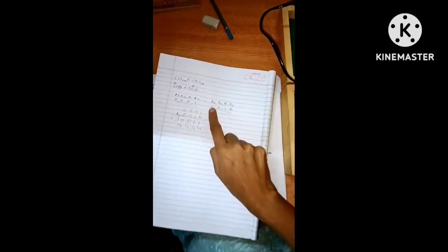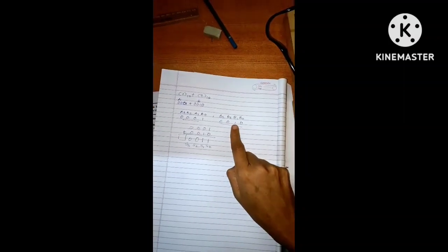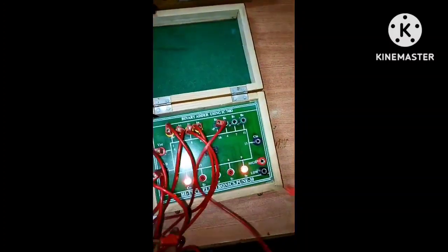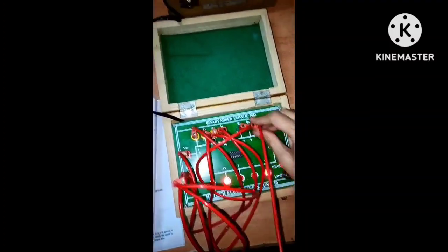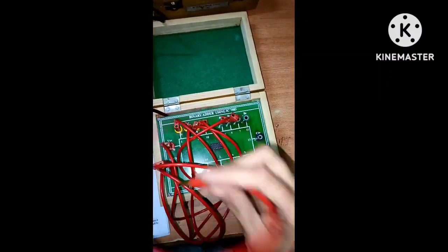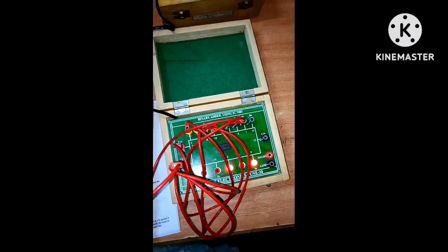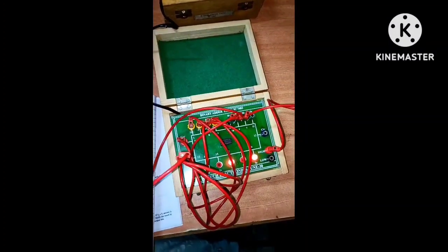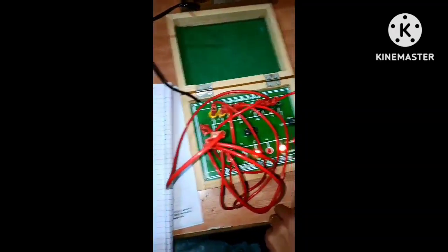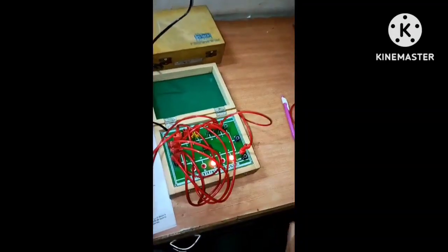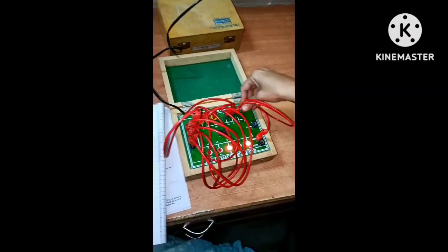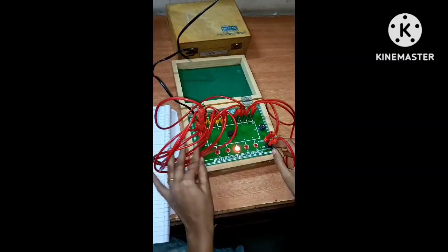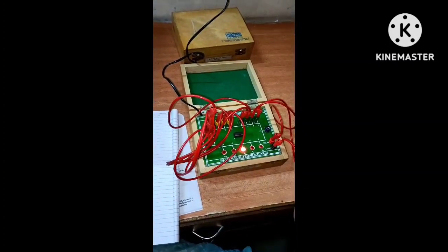For B, the data is 0010. So B1 is 1, we will connect this pin to positive VCC. Either you may connect here or here, there is no objection. Pin number 13 should be grounded.